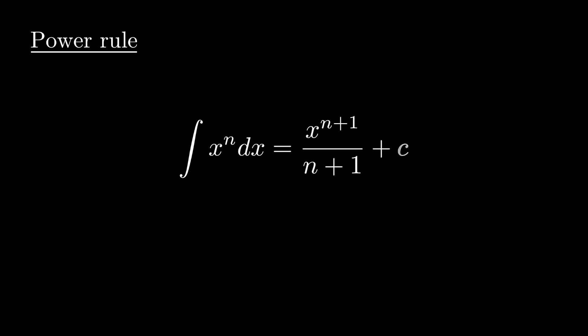Power rule: integration of x^n dx is equal to x^(n+1) over (n+1) plus c. We add c to all indefinite integration questions. Indefinite integration means there will be no limits in the integration symbol.